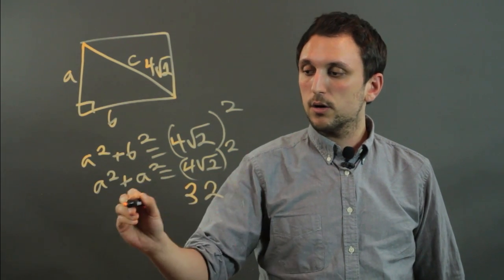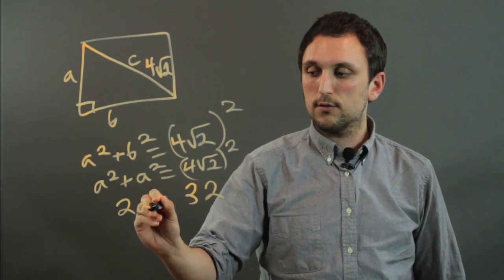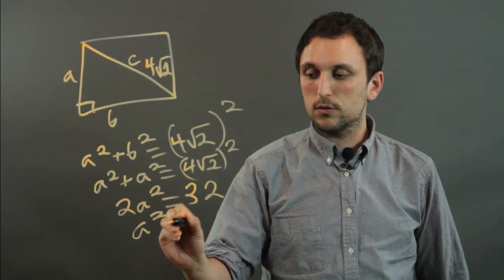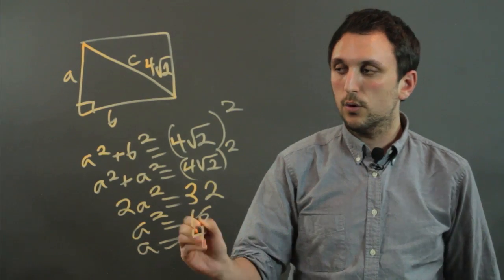So a squared plus a squared, or 2a squared equals 32. So a squared equals 16, and a equals 4.